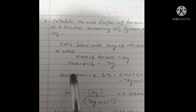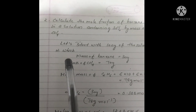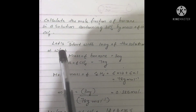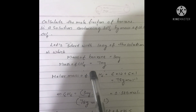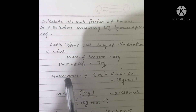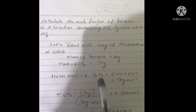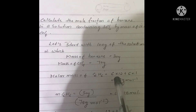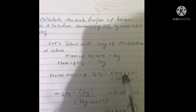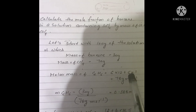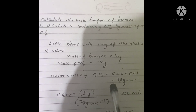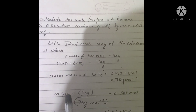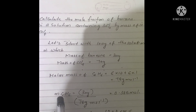Mole fraction is the ratio of the number of moles of a particular component to the total number of moles of all the components. For C6H6, benzene: molar mass of benzene equals 6 times the atomic mass of carbon (12) plus 6 times the atomic mass of hydrogen (1 gram per mole), which equals 78 grams per mole.